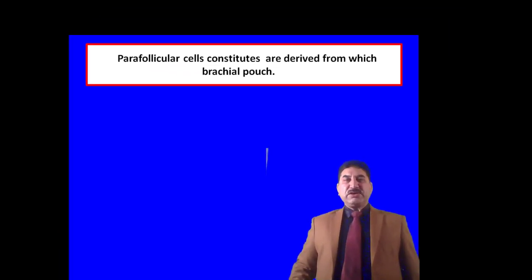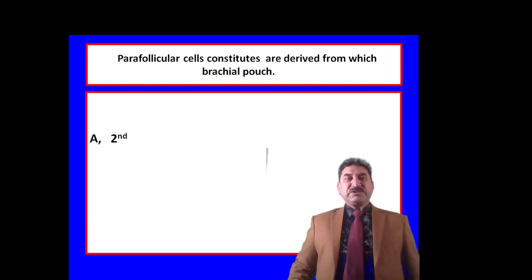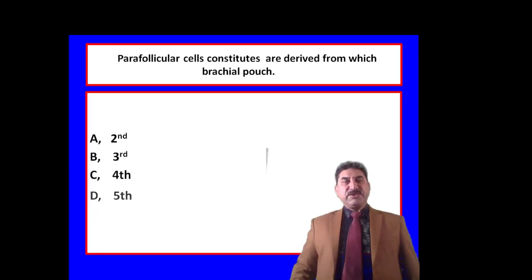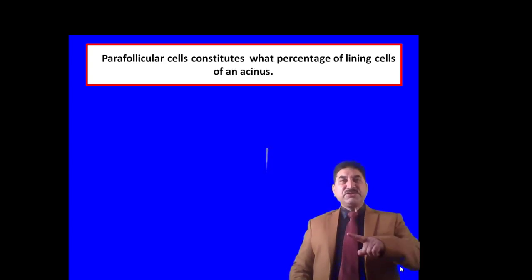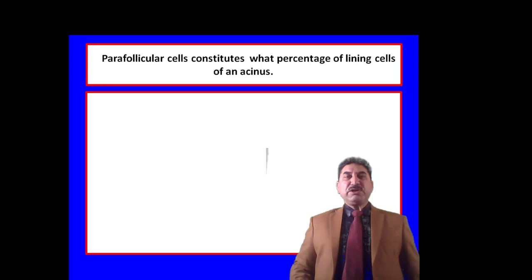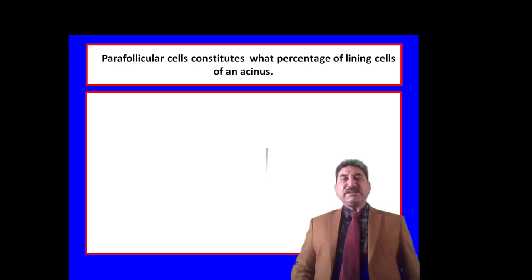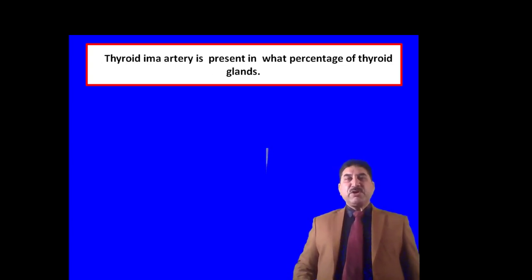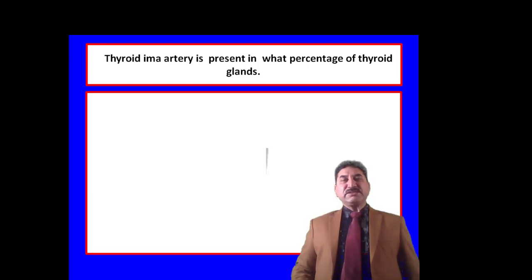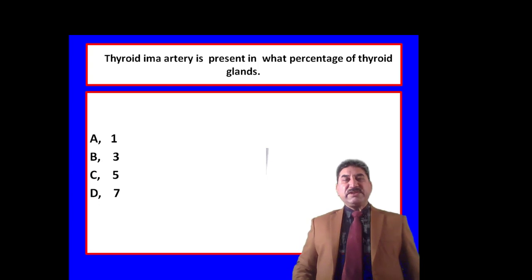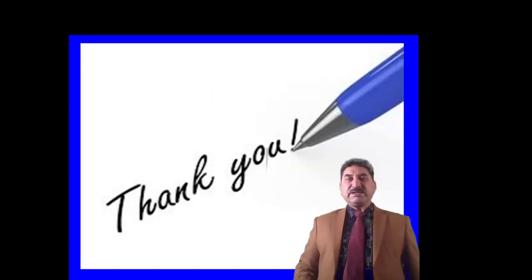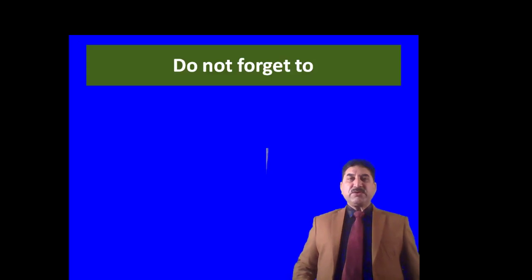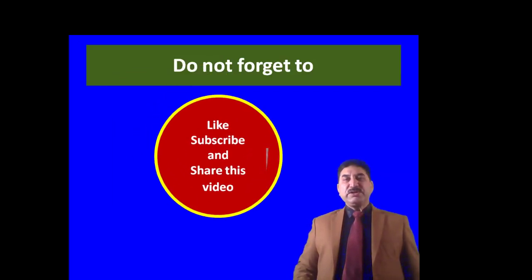The true capsule of the thyroid is derived from condensation of the connective tissue. Parafollicular cells are derived from the fifth pharyngeal pouch; no other structures are derived from it. Parafollicular cells constitute two percent of the lining cells of an acinus. The thyroid ima artery is present in three percent of thyroid glands. Thank you for watching — do not forget to like, subscribe, and share this video.